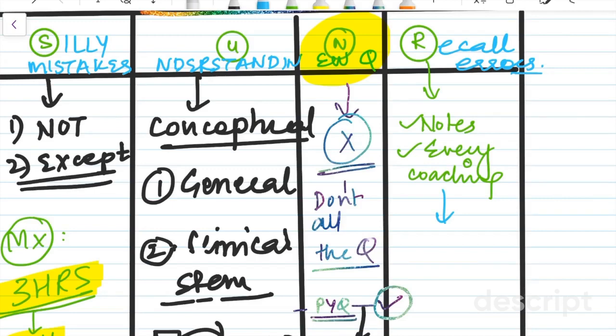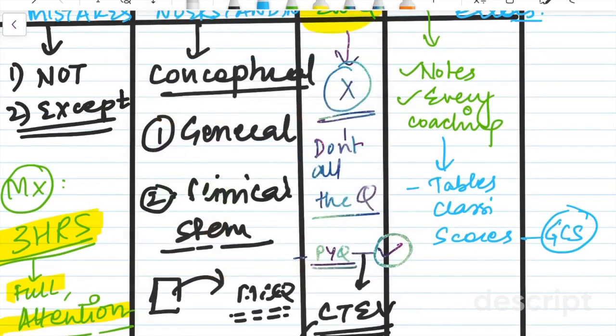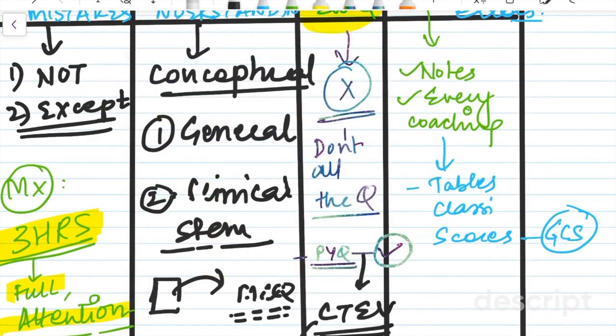So these things like common tables, common classifications, scores, something as simple as calculating the GCS. So often we don't remember about the GCS or, for example, the child pug score, scores like these which are frequently asked.